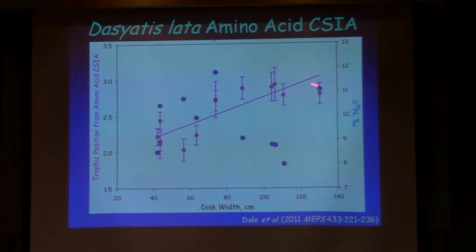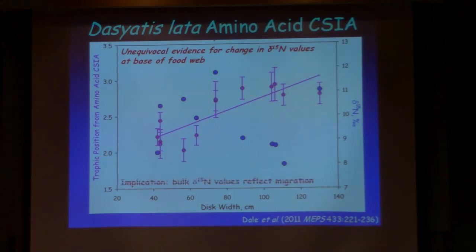That, you know, if anything, the trophic position increases as a function of size. It doesn't decrease. So what this tells us is that definitely these, it's unequivocal evidence that these bulk values are a signal of the base of the food web. And they tell us that it's telling us about migration. These things are swimming outside of the bay. They're now living in a region that has a lower baseline. And that's propagating up the food web.